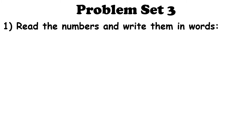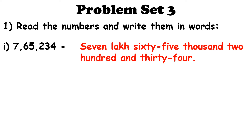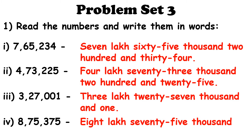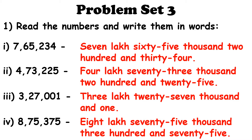Let us start with Problem Set 3, in which we will see 6-digit numbers. Read the numbers and write them in words. The first number is 7,65,234. The second number is 4,73,225. The third number is 3,27,001. And the fourth one is 8,75,375.